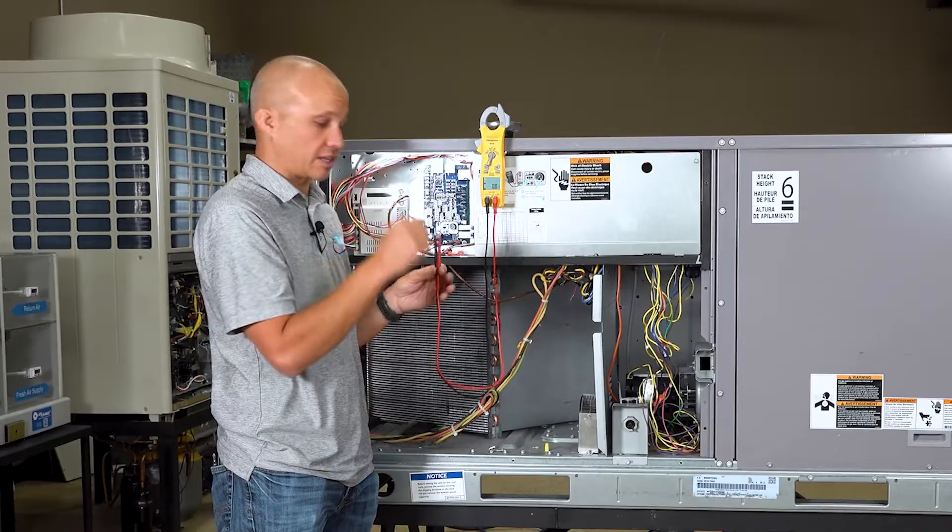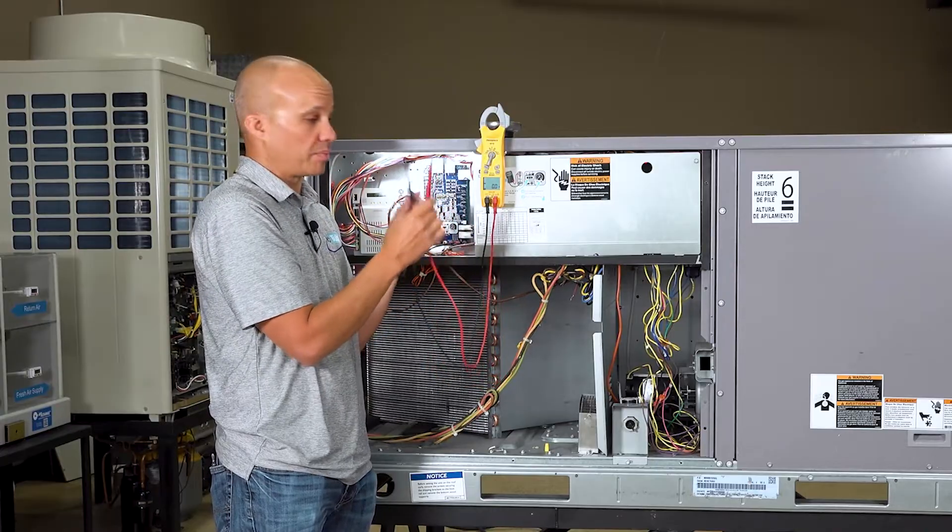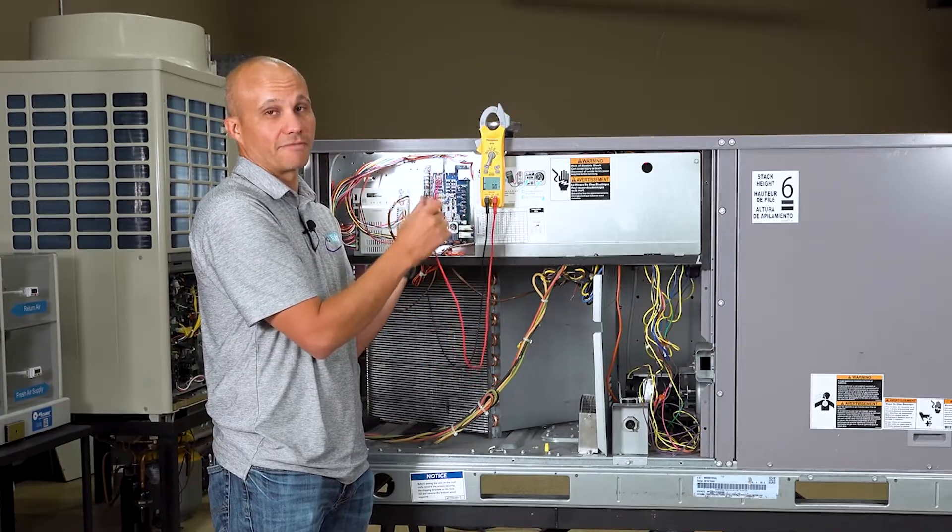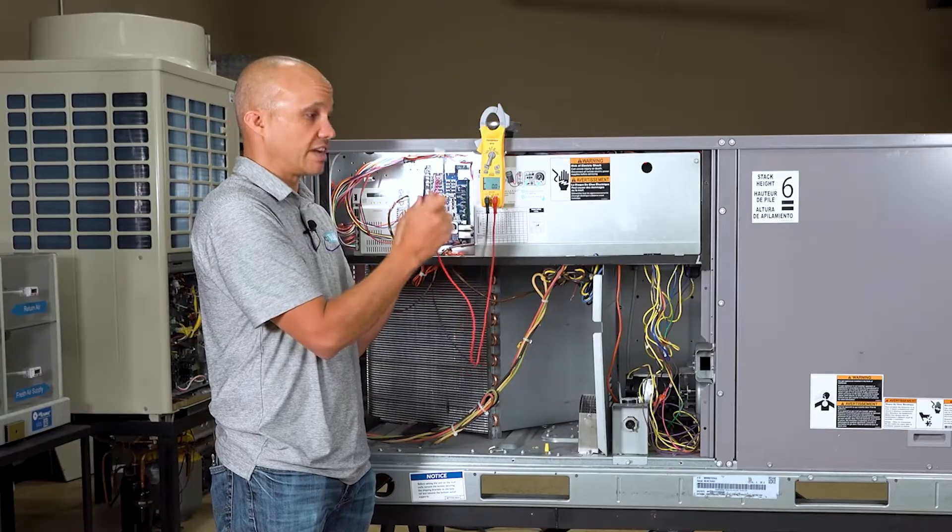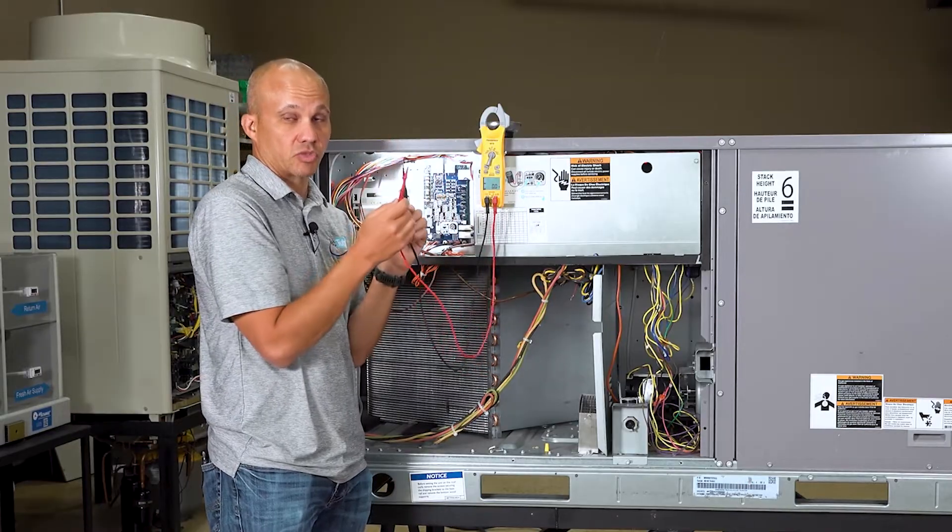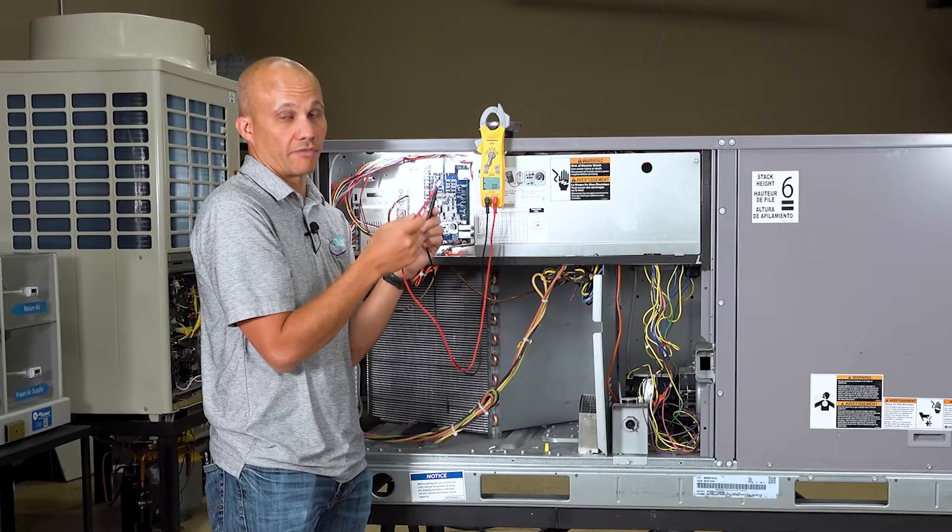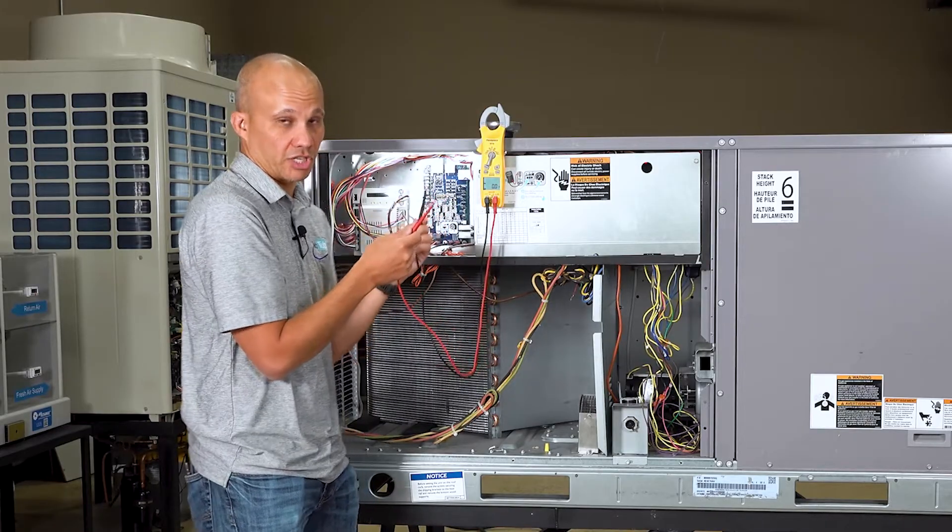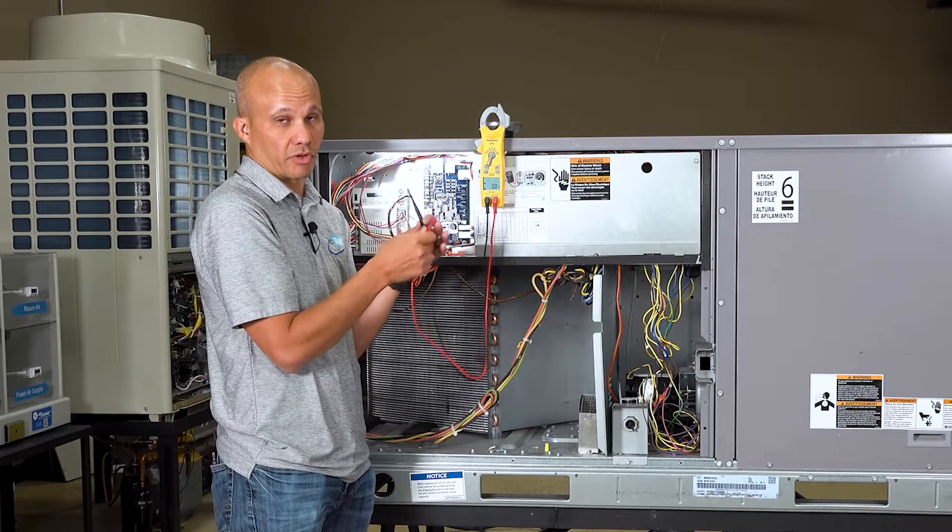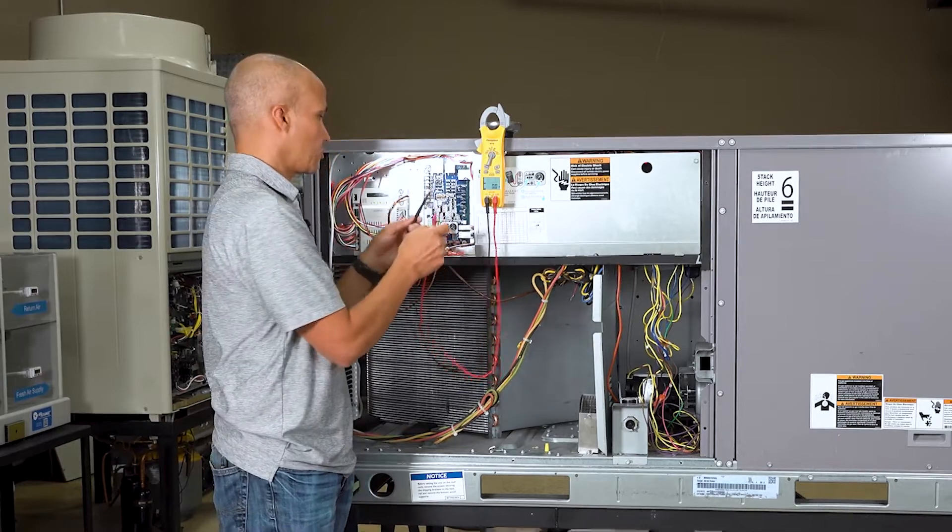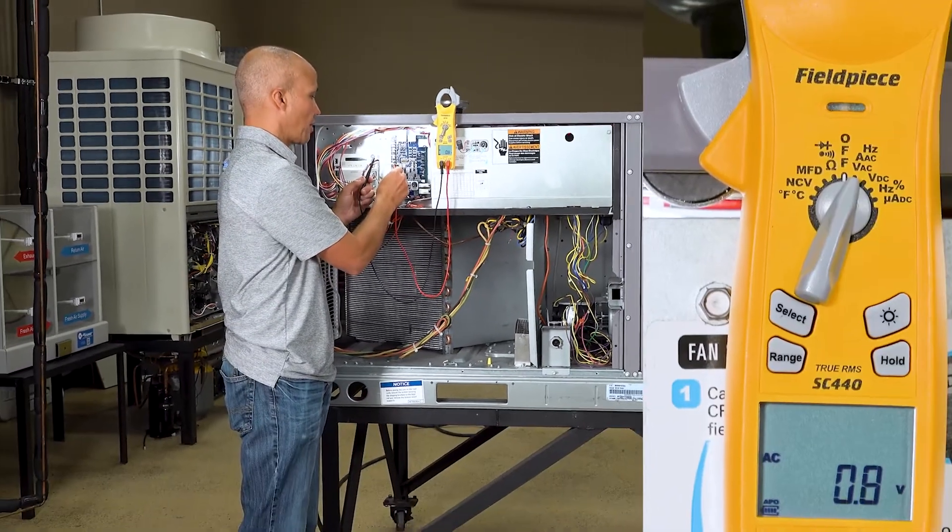When it calls for fan it closes that switch and my meter can pick that up. This meter reads differential voltage. So the difference between these two points. If that switch in the thermostat is closed it will read zero. Zero volts. So a call for fan means no voltage on R and G. No call means I'll have 24 volts. It's kind of inverted logic.